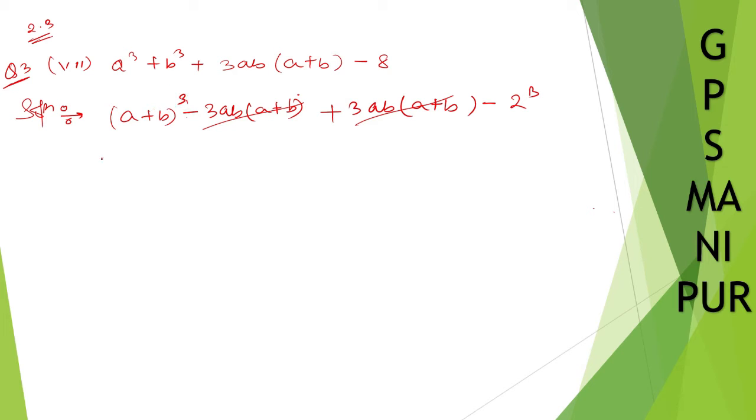So, (a+b)³. So, (a+b)³ - 2³. Now, (a+b)³ - 2³.